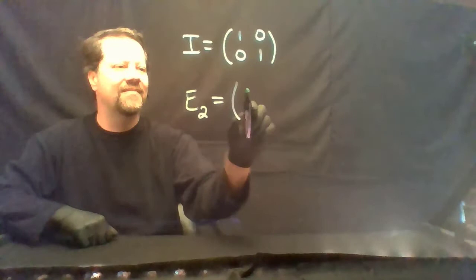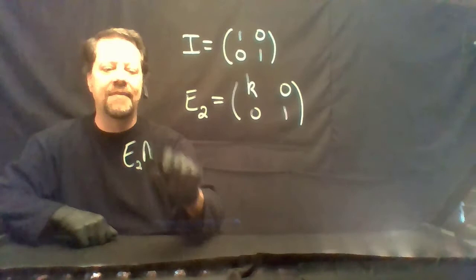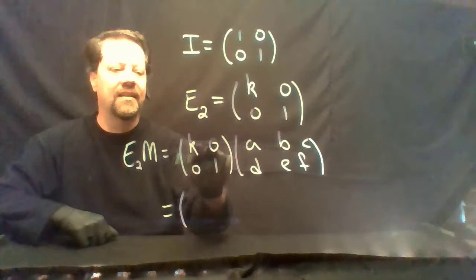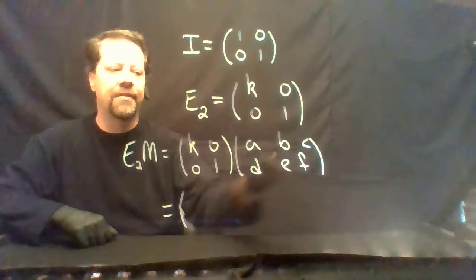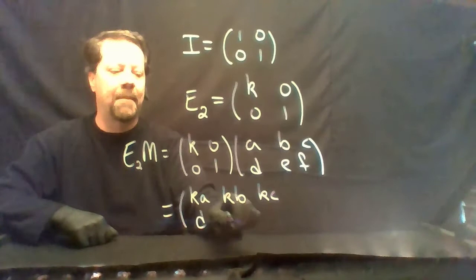The second elementary row operation is to multiply a row by some constant. Suppose we multiply the first row of the identity matrix by K, giving E2. If we multiply E2 = [K 0; 0 1] times [a b c; d e f], when we multiply by the first row we get K times each entry in the first row of M, and when we multiply the second row we just pick up the second row of M.